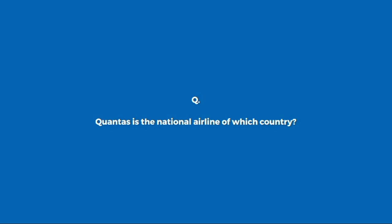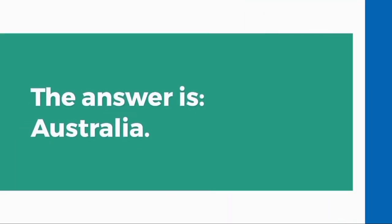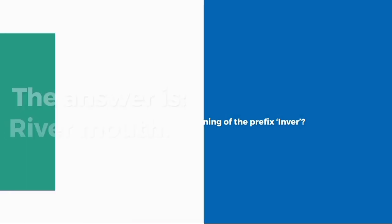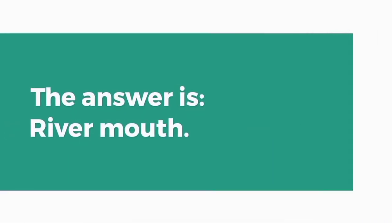Qantas is the national airline of which country? Australia. What in Scotland is the meaning of the prefix 'Inver'? River mouth.